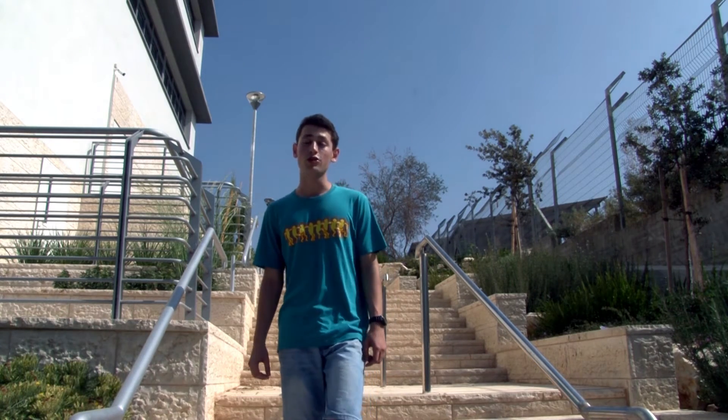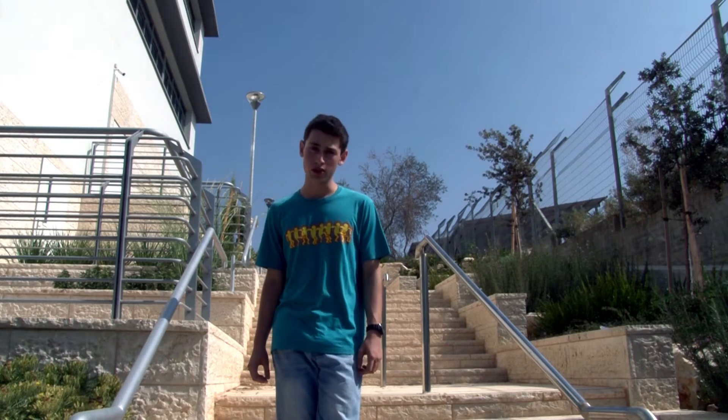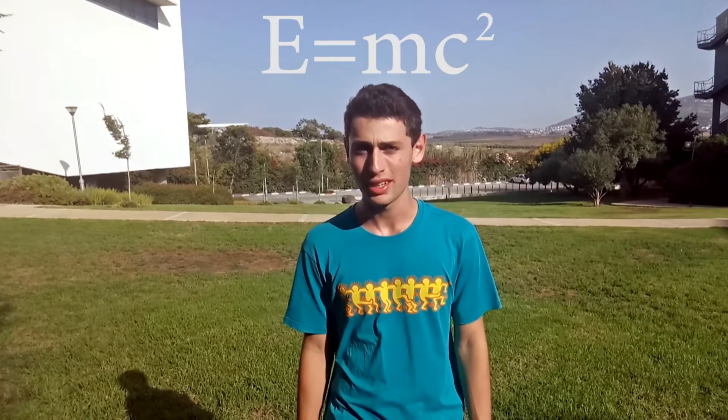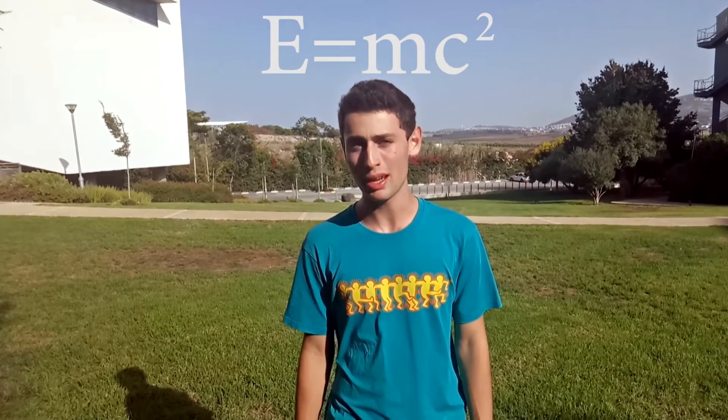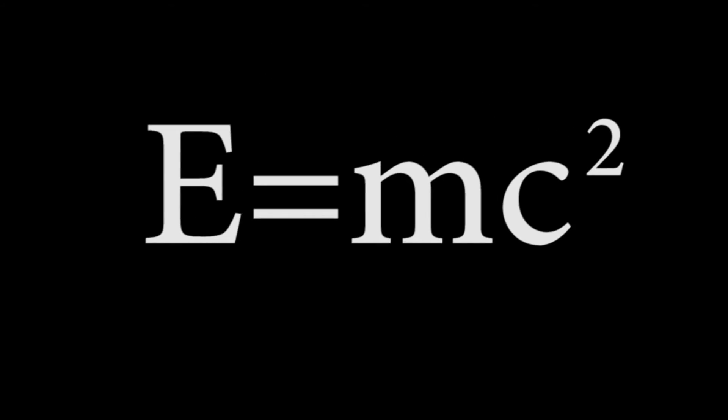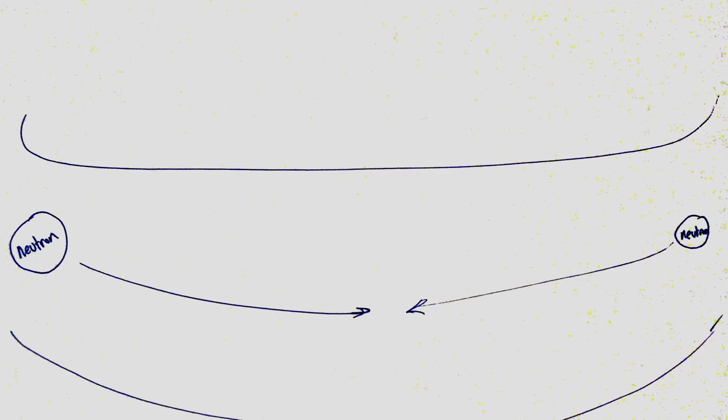In the 20th century, the development of physics changed the way we perceive mass. According to Einstein's special relativity, mass can transform into energy and vice versa: E equals MC squared, where E is energy, M is mass, and C is the speed of light.